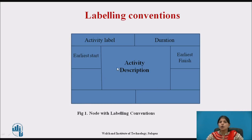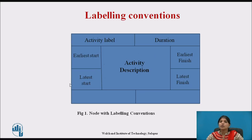This is the node with labeling convention. It shows the activity label and duration. With the forward pass, you calculate the earliest start and earliest finish date. With the backward pass, you calculate the latest start and latest finish date. The node also shows activity span and float.